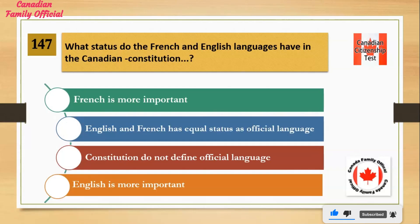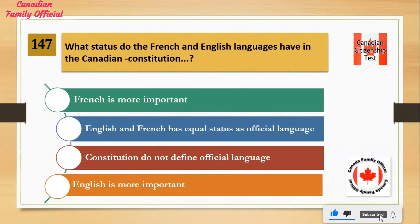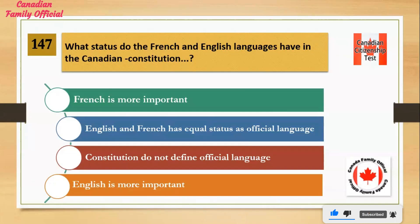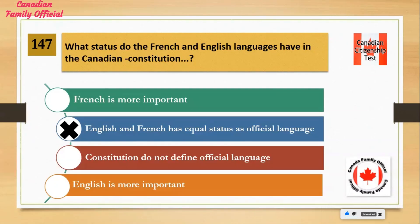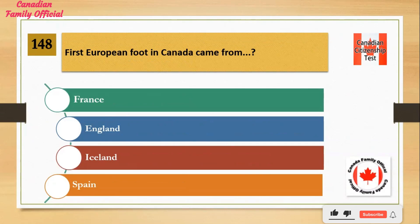What status do the French and English languages have in the Canadian Constitution? Number 1: French is more important. Number 2: English and French have equal status as official languages. Number 3: The Constitution does not define official language. Number 4: English is more important. And the answer is English and French have equal status as official languages.